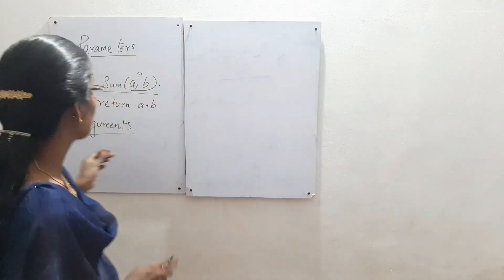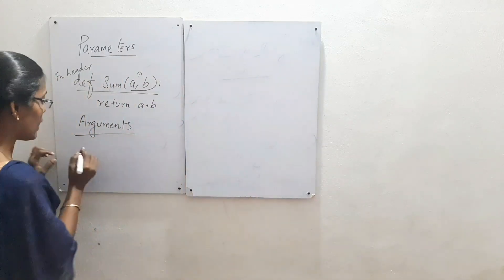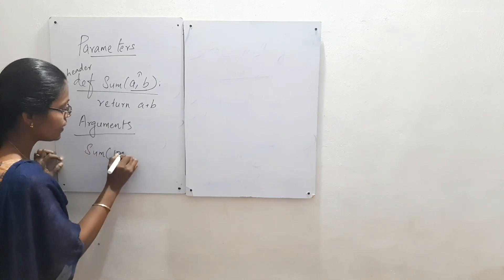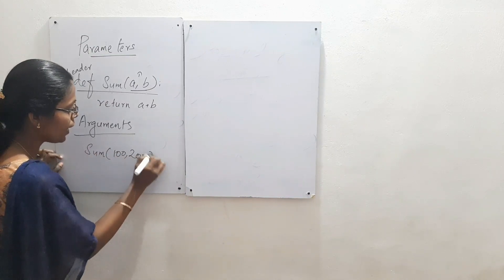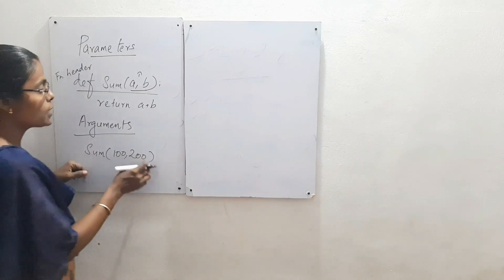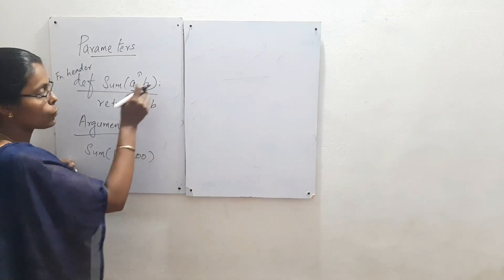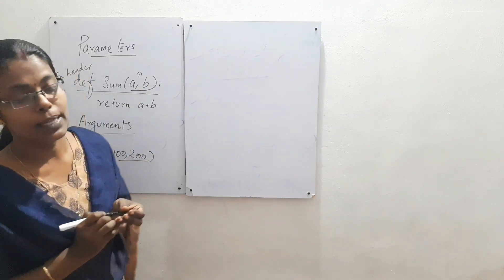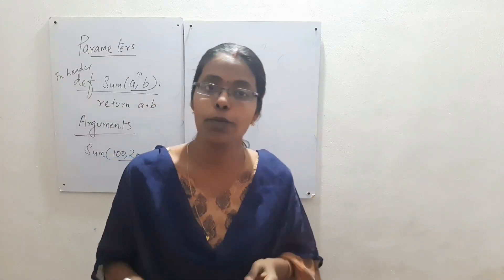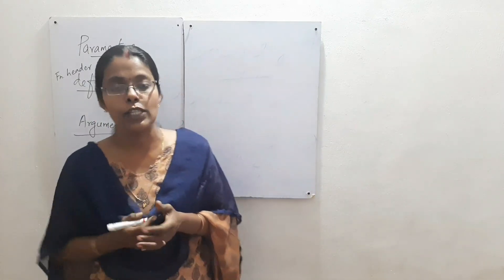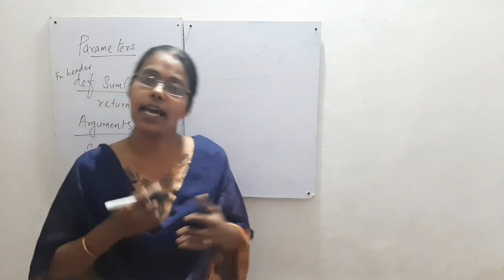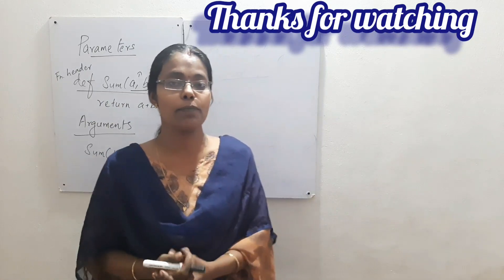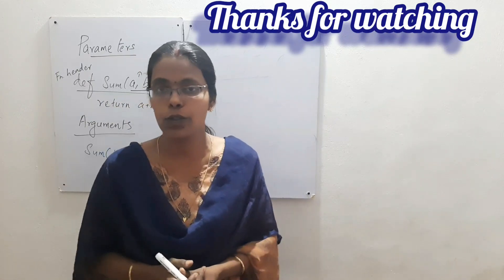For example, I can call `sum(100, 200)`. These values — 100 and 200 — are called arguments. This is the difference between arguments and parameters, or actual parameters and formal parameters. We are all familiar with these two types of parameters in other languages as well.